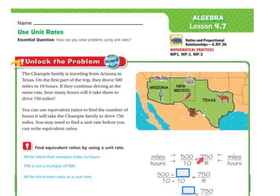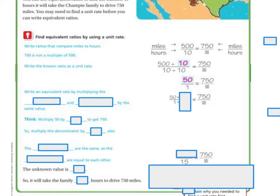We know 750 is something, but we don't know what the blank is. If we take that 500 and divide the top and the bottom by 10, then 500 divided by 10 is 50, and 10 divided by 10 is 1. So my unit rate is 50 over 1. So I can compare that to 750 over the missing number.